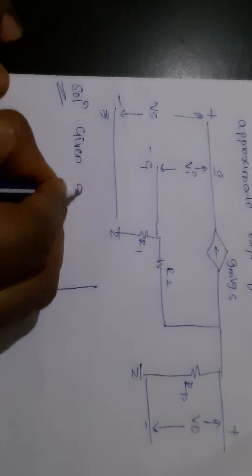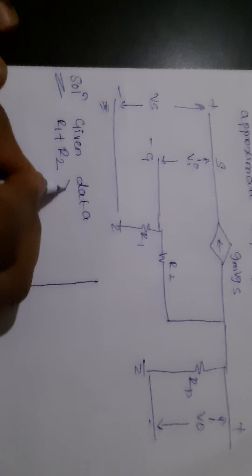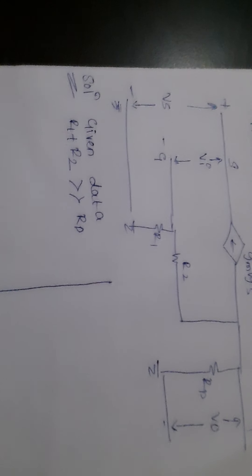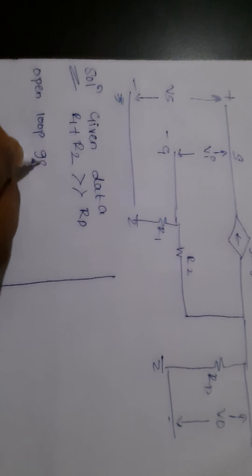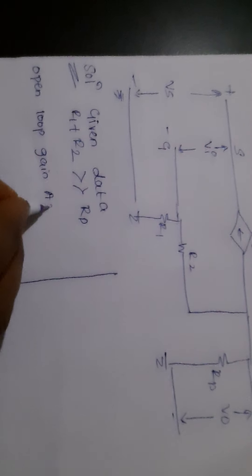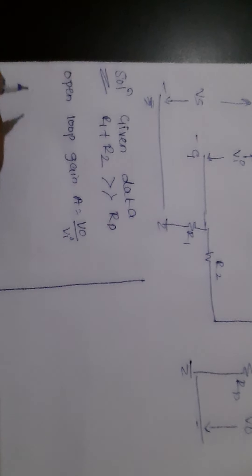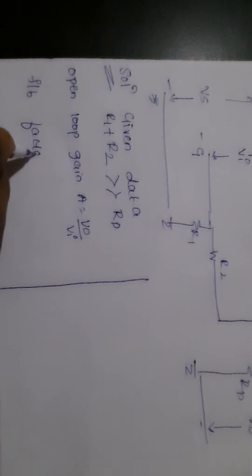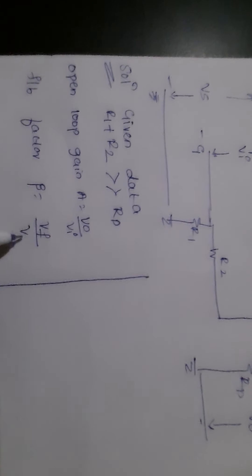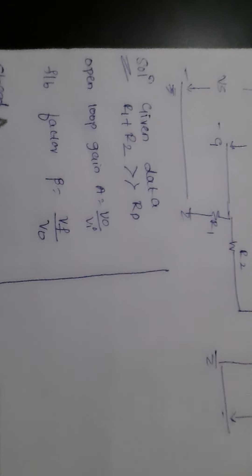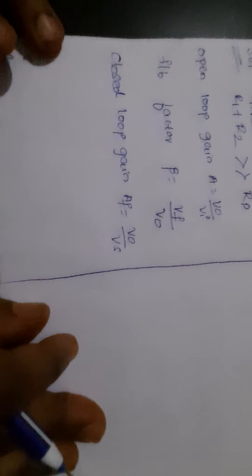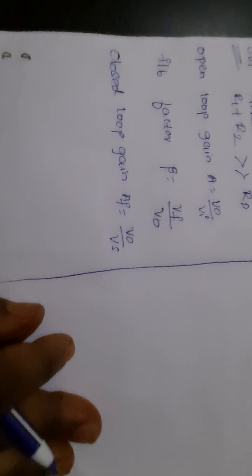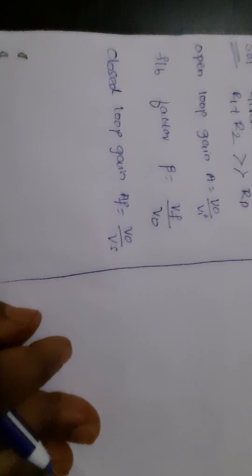The given data is: r1 plus r2 is much greater than rd. We are supposed to find the open loop gain A given by V_naught upon Vi, the feedback factor given by beta equals Vf upon V_naught, the closed loop gain given by V_naught upon Vs, and also find the approximate expression for AF.